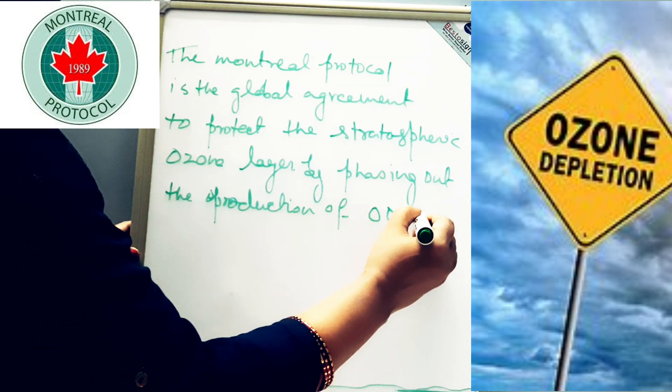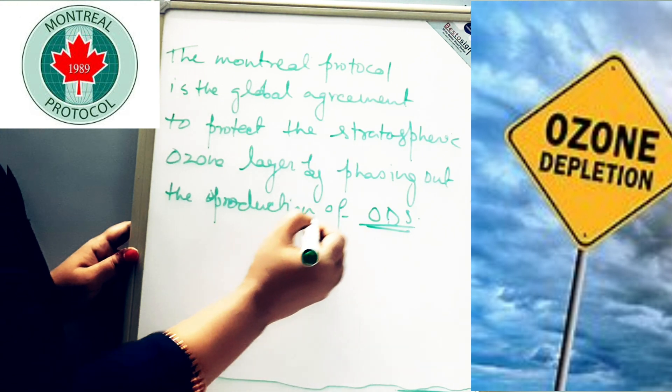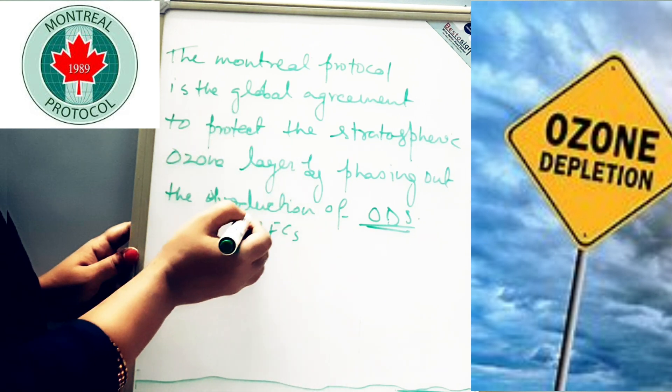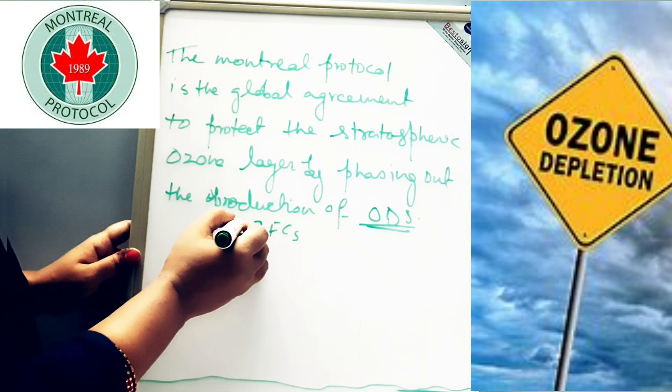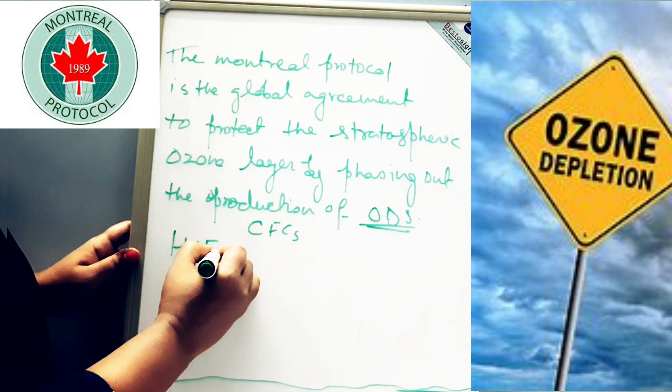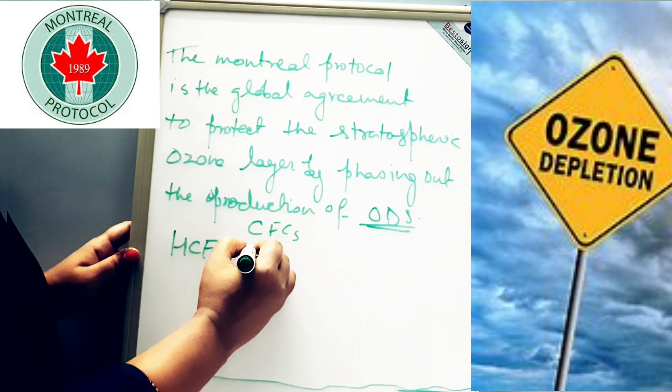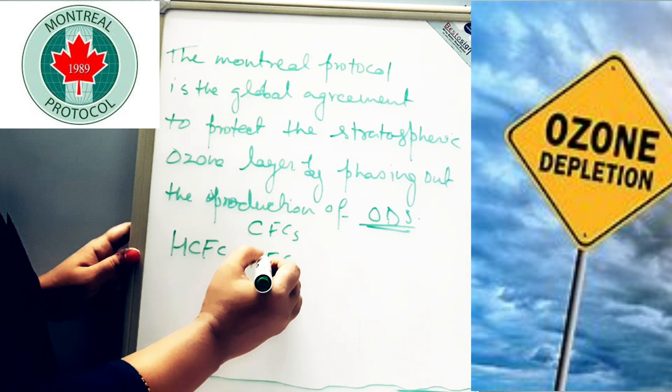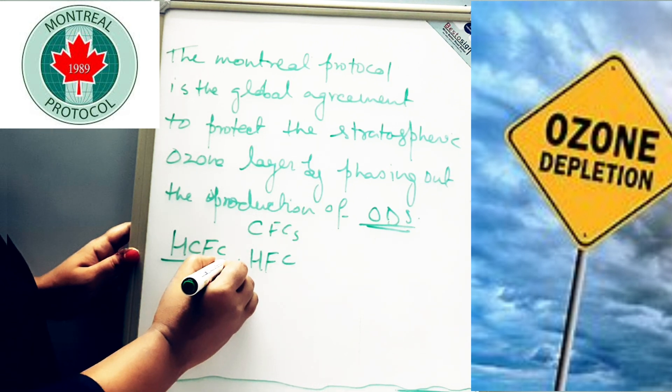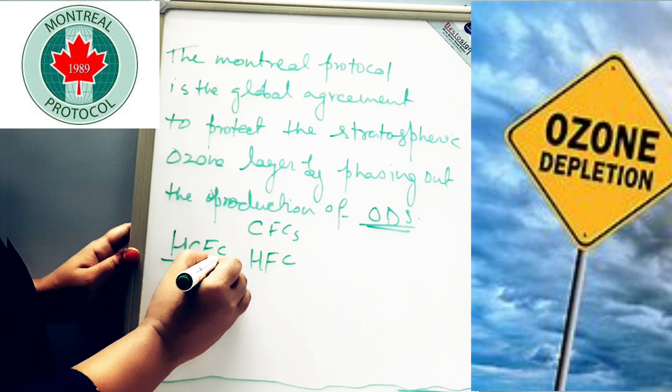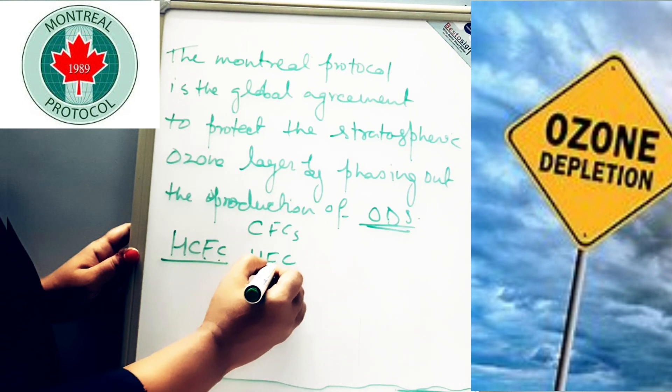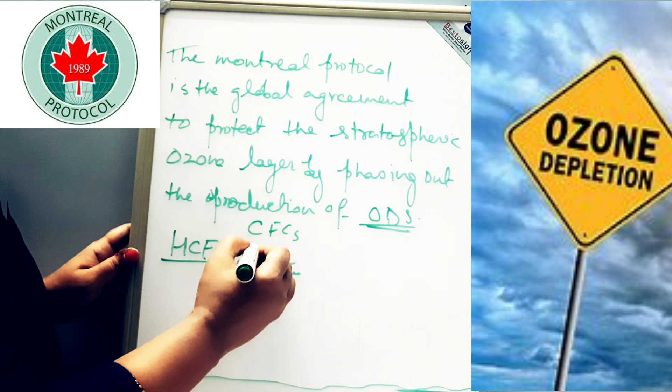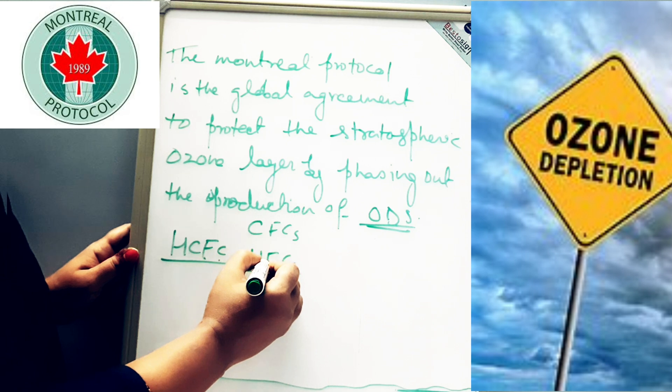ODS means ozone depleting substances like CFCs. Now we'll see what is the alternative of CFC. So HCFC and HFC - these two compounds are considered as alternatives of CFC. Full form of HCFC is hydrochlorofluorocarbon, and full form of HFC is hydrofluorocarbon.